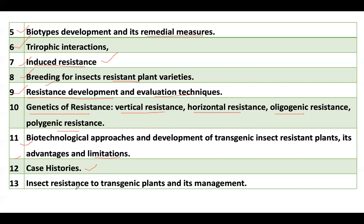Regarding insect resistance to transgenic plants and its management — the pink bollworm has developed resistance to Bt cotton, and in spite of growing Bt cotton it is now able to damage the transgenic plant. You need to study how to manage such resistant insects, which involves gene pyramiding and gene sequencing methods. This completes all the topics you need to study in this chapter.